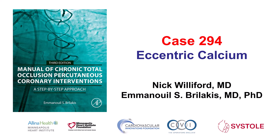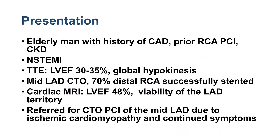This is Nick Williford and Manos Berlakis presenting case 294 for the manual of CTO interventions. This is a case of a CTO with eccentric calcium. The patient was an elderly gentleman who had previously PCI of the right coronary artery. He came with a non-ST elevation myocardial infarction, left ventricular EF of 30-35%, and was found to have a 70% distal right that was stented and a CTO of the mid-LAD. A cardiac MRI showed improvement in ejection fraction to 48% with viability of the LAD territory, and because of continued symptoms he was sent for PCI of the LAD CTO.